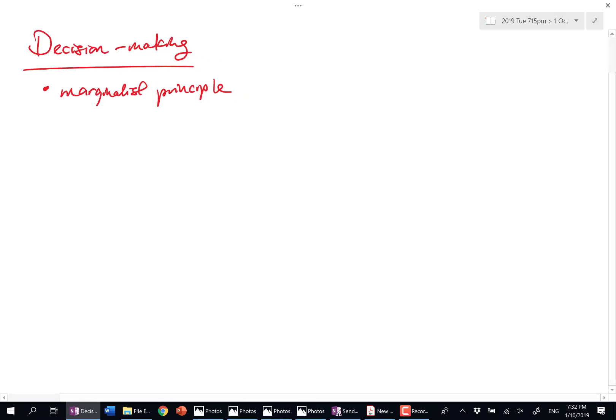Looking at the marginalist principle, we know that if you're a consumer, if you're a producer, if you're the government, all three are applicable. The consumer wants to consume up to the point where MPB equals MPC. Same thing for producers, whereas this is what the government wants.